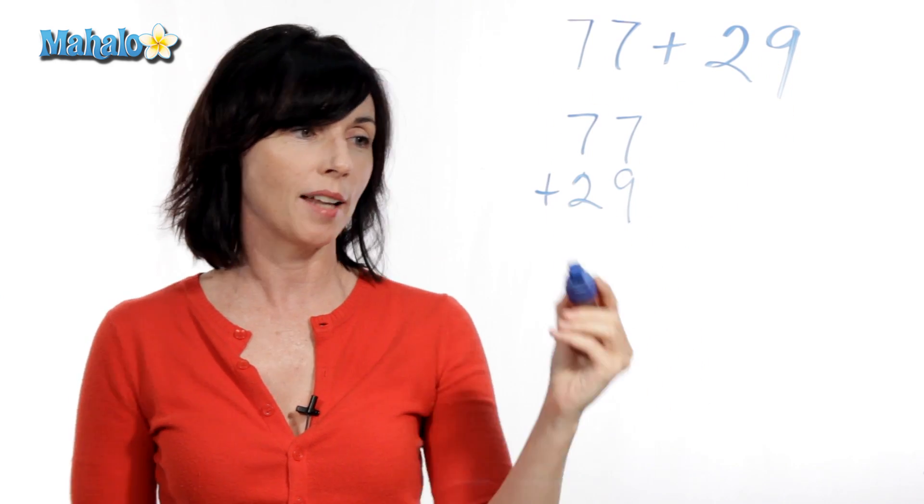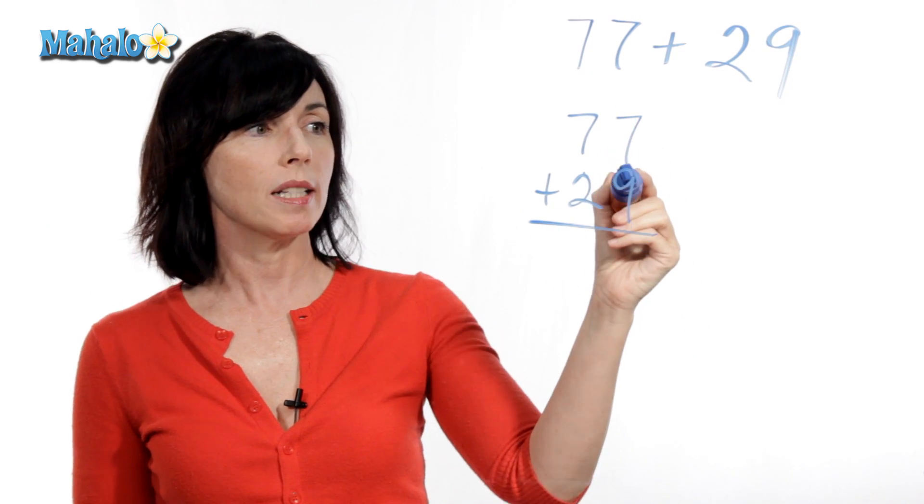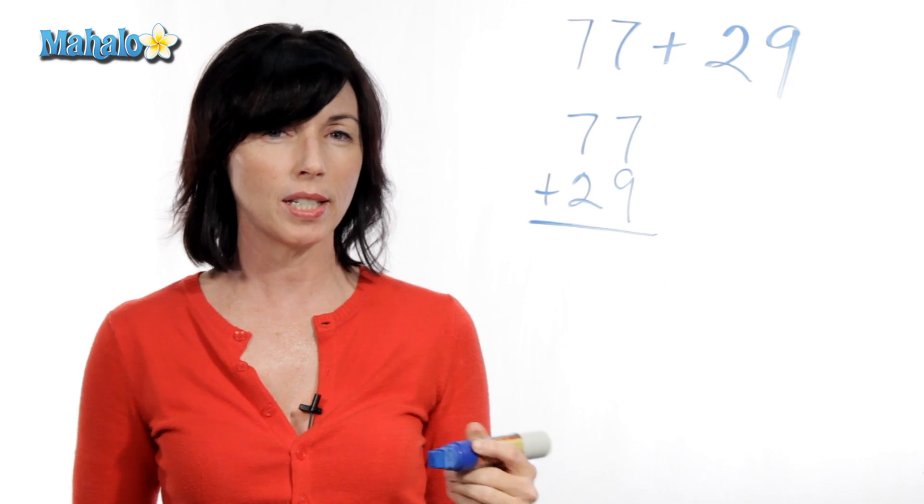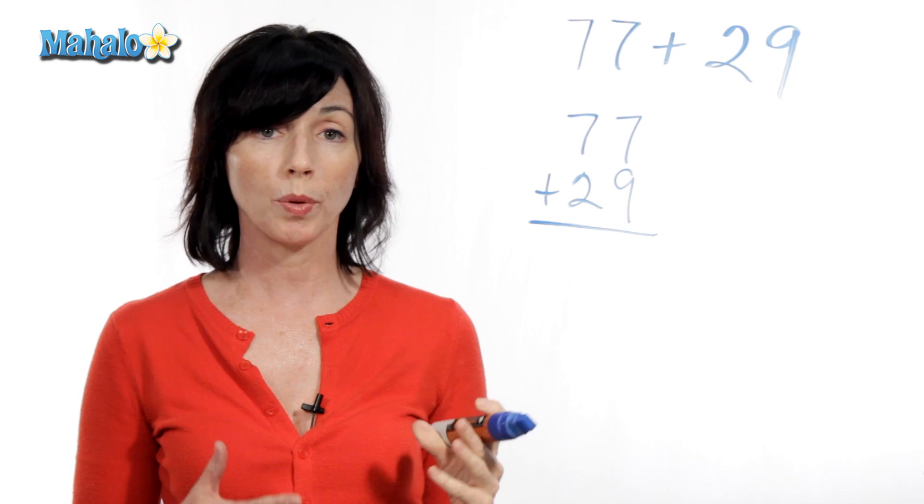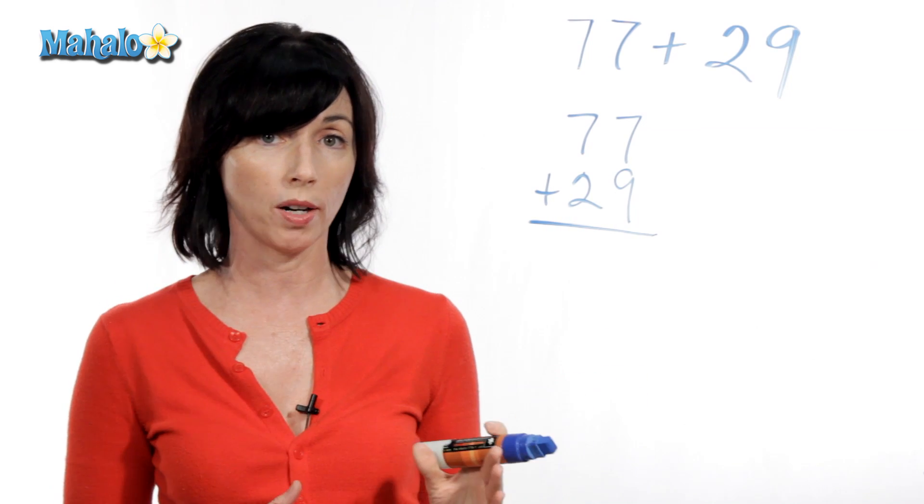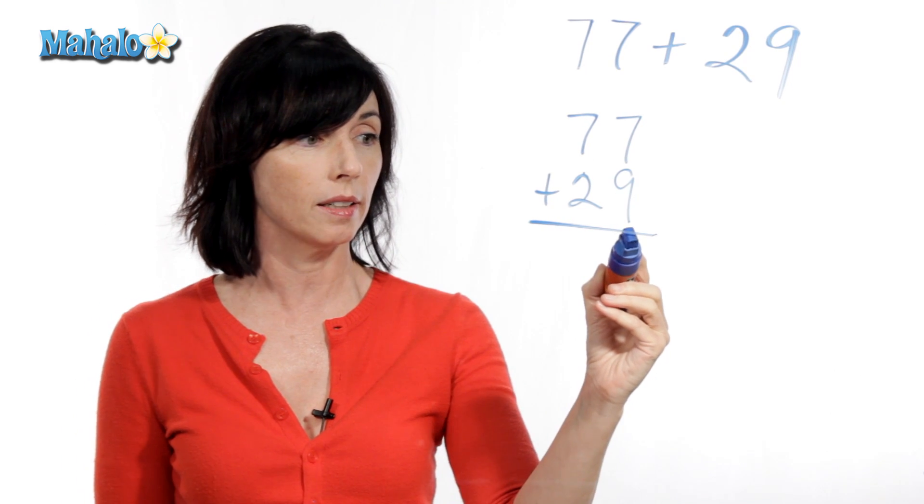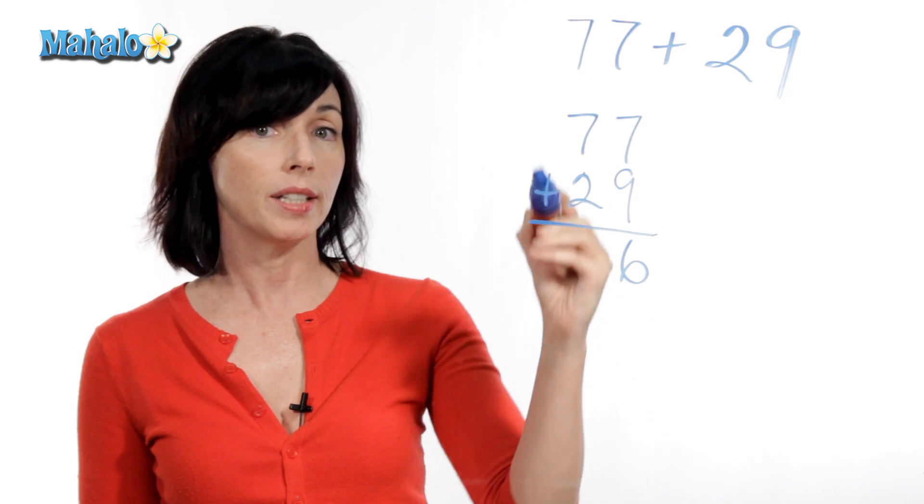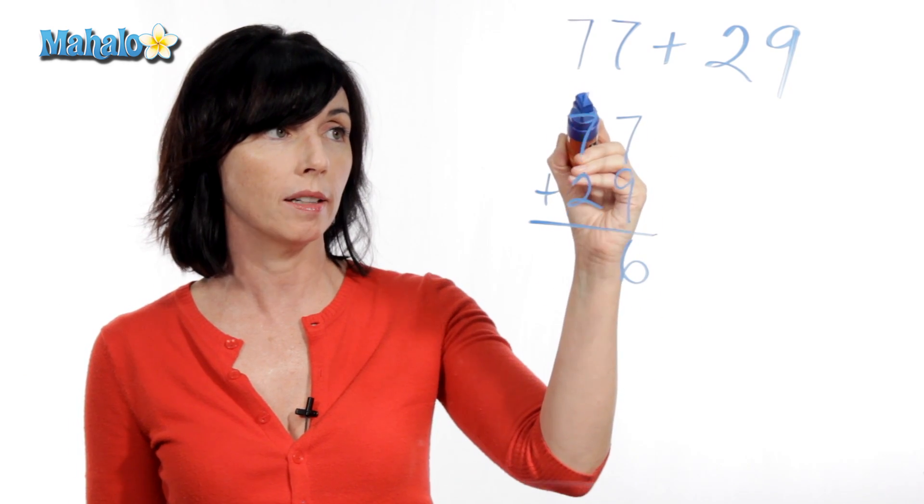So now let's add. Seven plus nine is equal to 16. Now, 16 is a two digit number. So what I'm going to do is just put the ones part of that number, the six, down here, and then carry the tens position of that number, which is one, up here.